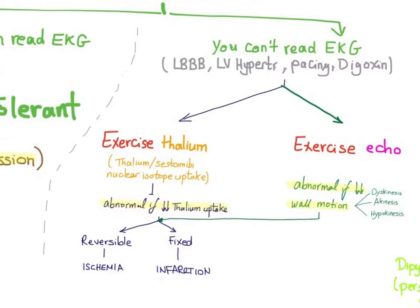So again, if you cannot read the EKG, you do exercise thallium or exercise echo. With exercise thallium, you know from decreased thallium uptake. With exercise echo, you know from decreased wall motion.